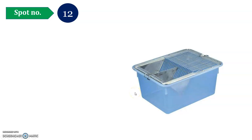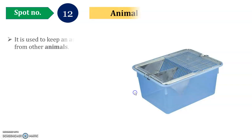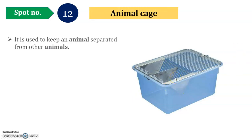This is the last spot in pharmacology and toxicology. Spot number 12 is the Animal Cage. The cage has two chambers — one contains water and the other contains feed material or food for the animal.